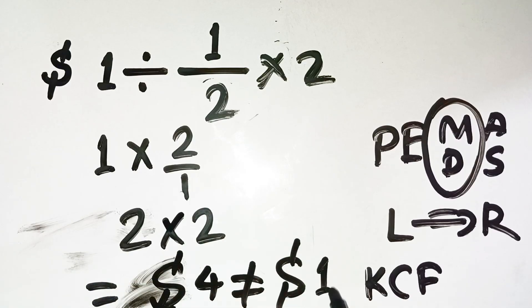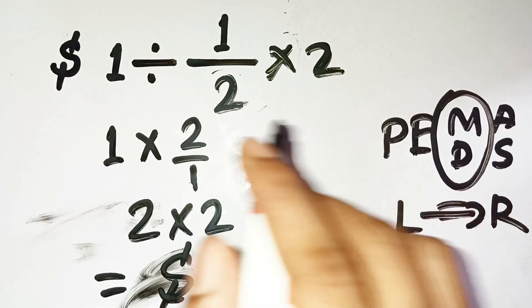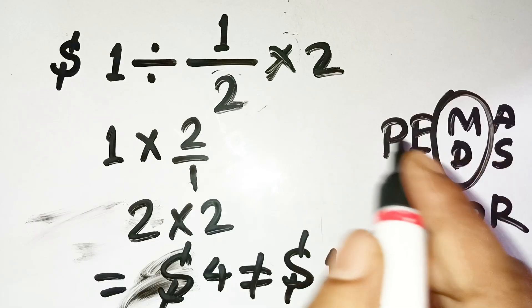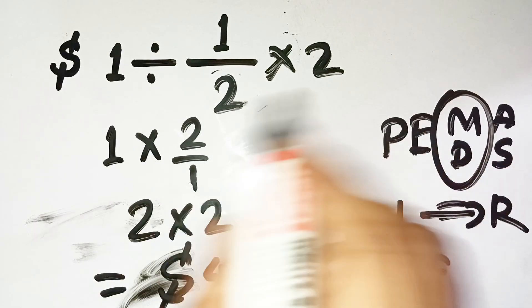Crazy, right? That one little fraction completely changes everything once you follow the rules properly. So next time you see a simple-looking math expression like that, don't just cancel numbers. Take it step by step and go left to right.